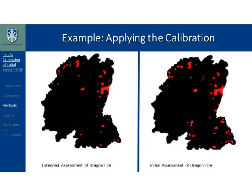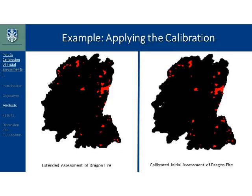Here's an example of what this looks like using the Driving Fire. The left picture shows an extended assessment and the right shows an initial assessment — the red represents high severity and black is not high severity. As you can see, there's more red in the initial assessment as expected. Once we apply that calibration to it, it tends to be pretty similar to the extended assessment as far as high severity goes.